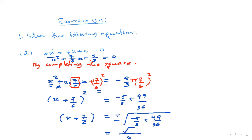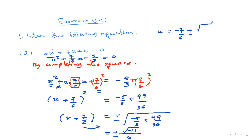So if you calculate, we get root of minus 11, which gives plus or minus root of minus 11i. So x equals minus 7 by 6 plus or minus square root of minus 11i.